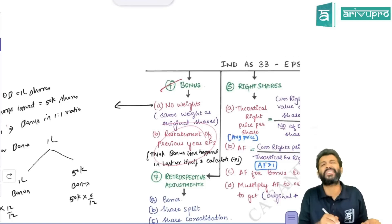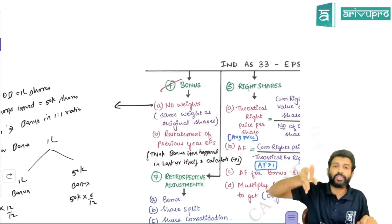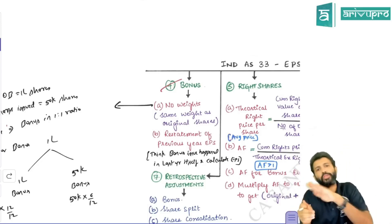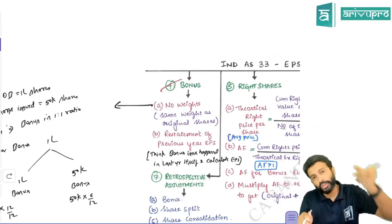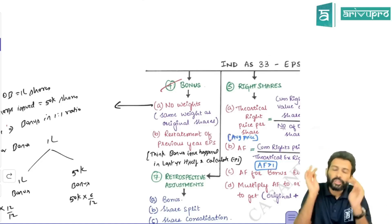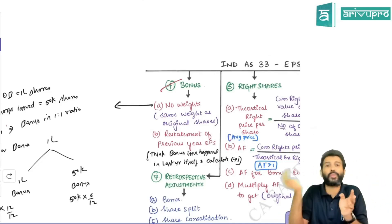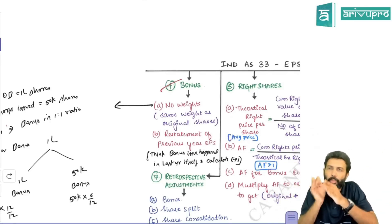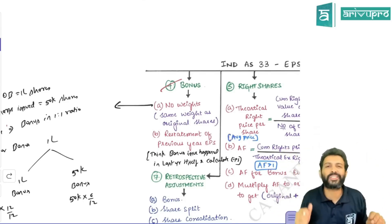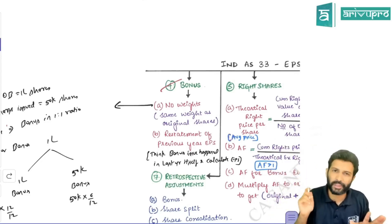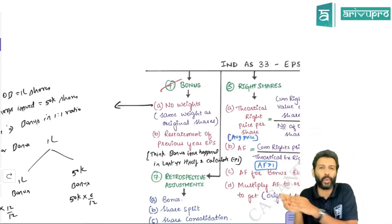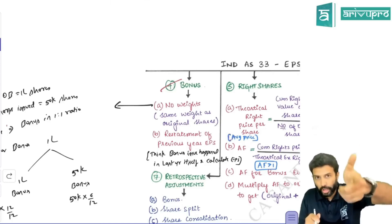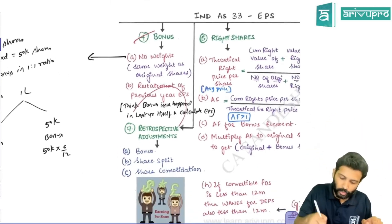Whenever there is a bonus issue, you need to restate the previous year EPS because EPS calculation is shown in the statement of P&L and comparative figures are also given. If you don't restate, it leads to distorted numbers. The simple way to restate is to think that the bonus happened in the last year itself and recompute last year EPS. This restatement is also required for stock split and stock consolidation — retrospective adjustment is necessary in all these cases.